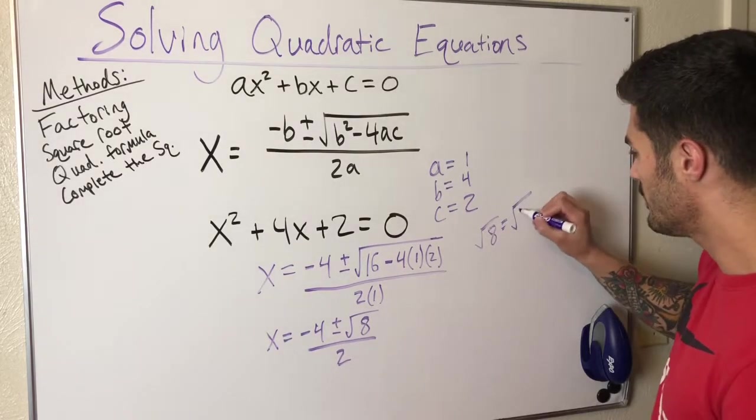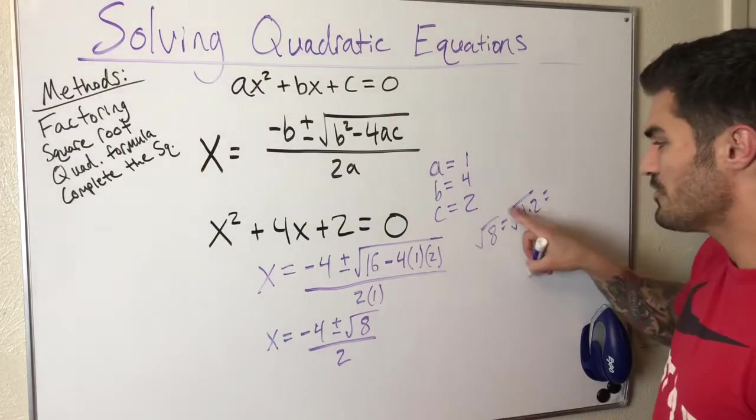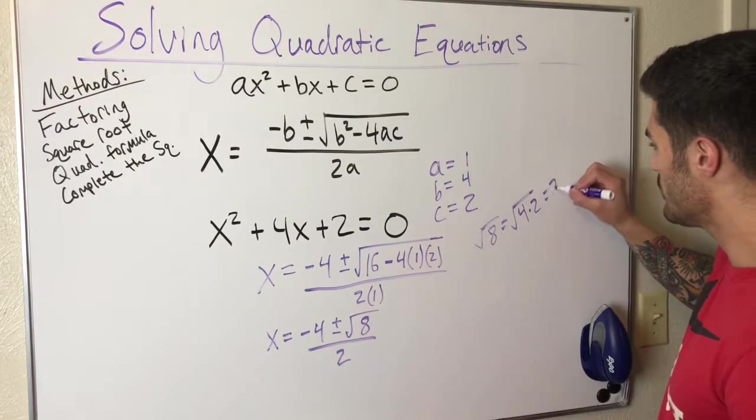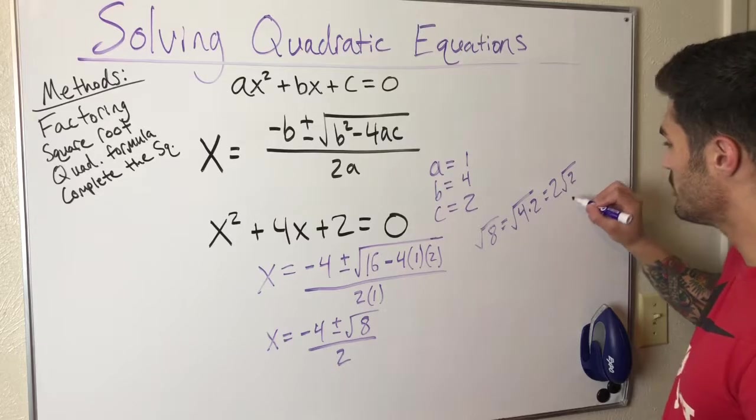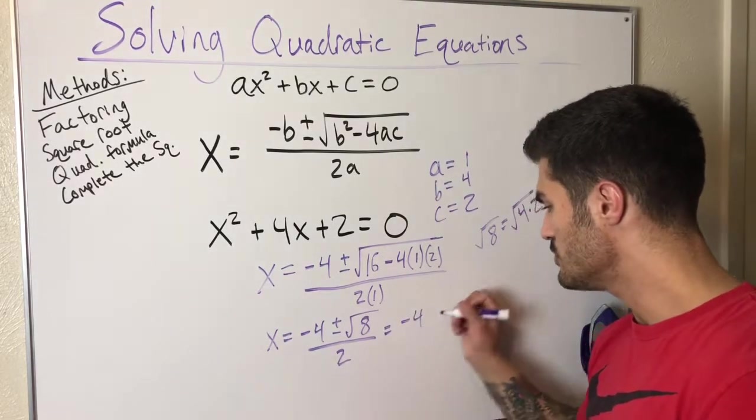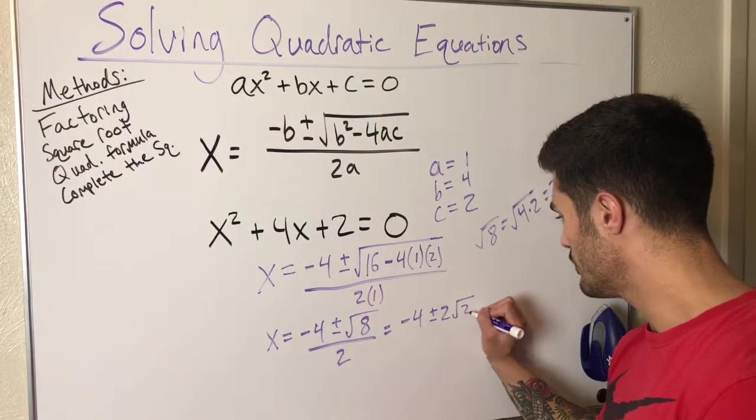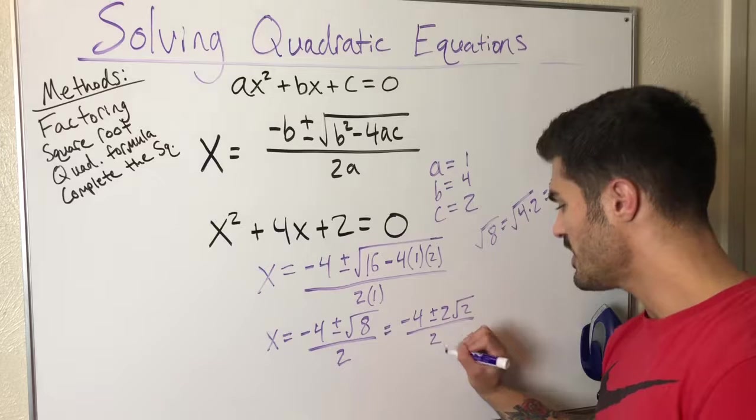I'll do a little side work here. What is root 8 equal to? That is root 4 times 2. I can bring out the 4 and it comes out as a 2. Square root of 4 is 2, so I'm left with 2 times root 2.